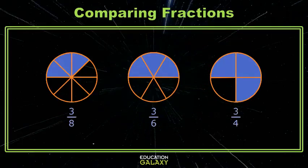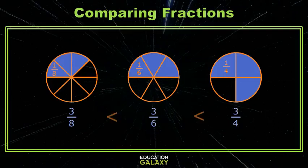Three fraction circles separated into different amounts of equal size parts. Three parts of each are shaded. If you look at the three fourths circle, one fourth does appear to be bigger than one sixth, which appears to be bigger than one eighth. So 3 of those fourths is more than 3 of the sixths is more than 3 of the eighths.